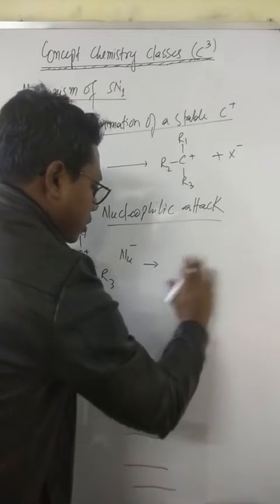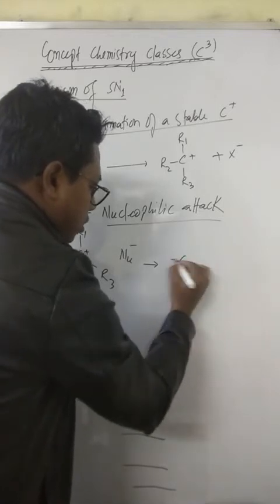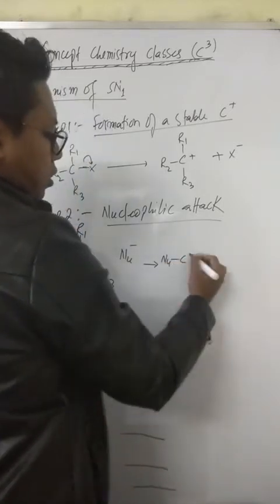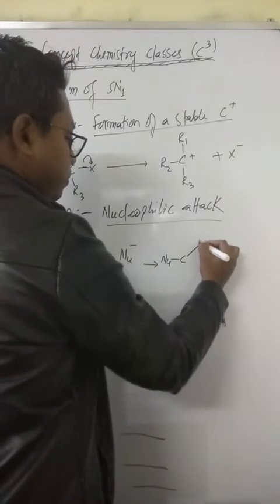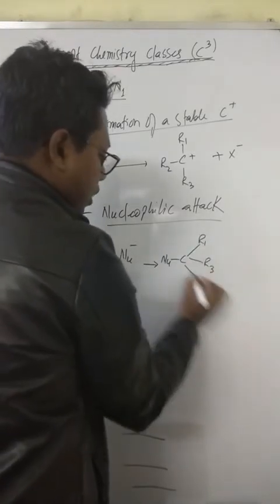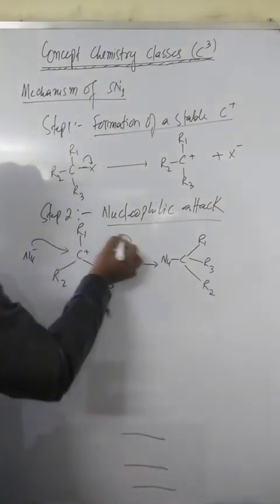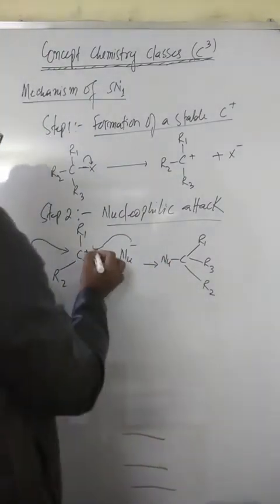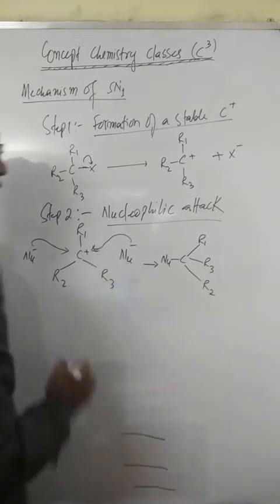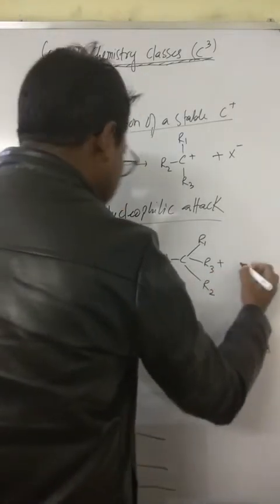With R1, R3, R2. And if the nucleophile attacks from the right side, which also has 50% chance, this will be different.